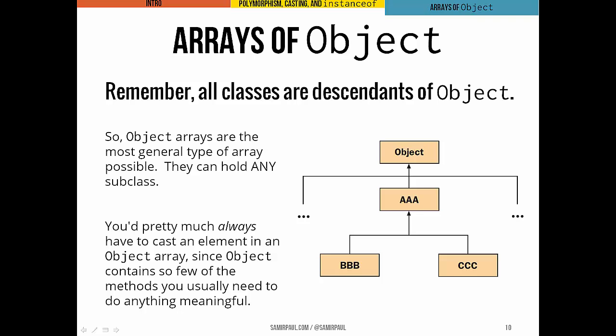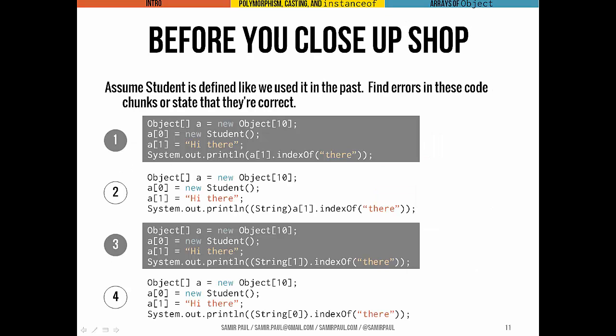A couple exercises for you before you head out. Take a look at these code chunks. Assume that student is defined as it was in the past. Find any errors in this code, or state that the little code chunk is correct. Take a couple minutes, pick through these, and discuss with your friends which ones you think are correct.